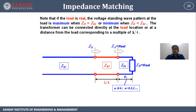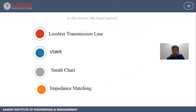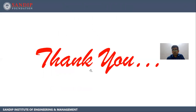Next is impedance matching. If the load is real, the voltage standing wave pattern at the load is maximum when Z_r is greater than Z_0, or minimum when Z_r is less than Z_0. The transformer can be connected directly at the load location or at a distance from the load corresponding to a multiple of lambda by 4. In this lesson we have learned lossless transmission line, VSWR, Smith chart, and impedance matching. Thank you.